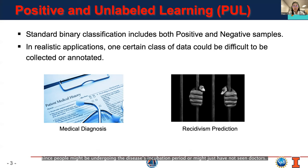the much larger population of undiagnosed individuals are practically mixed with both positive and negative examples, since people might be undergoing the disease's incubation period or might just have not seen doctors. Similarly, in recidivism prediction, the people who have recidivated can be labeled as positive, while the remaining unlabeled ones are mixed with both positive and negative samples. We call this learning setting as positive and unlabeled learning, short as PUL.